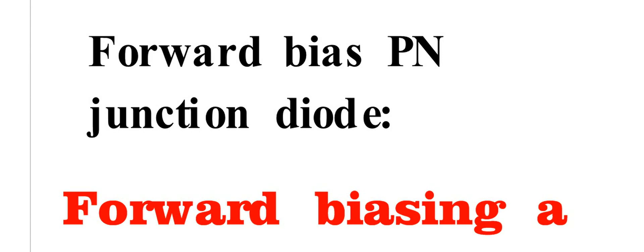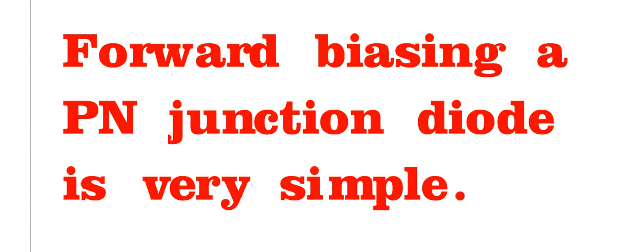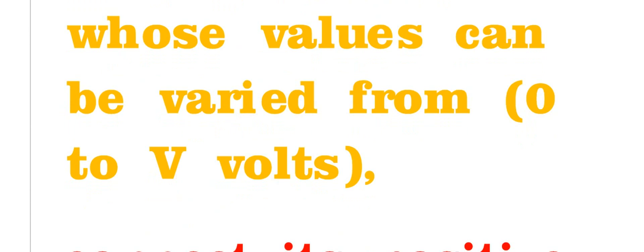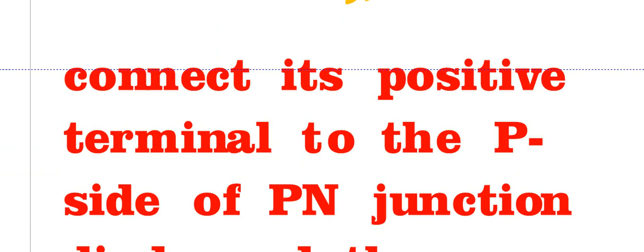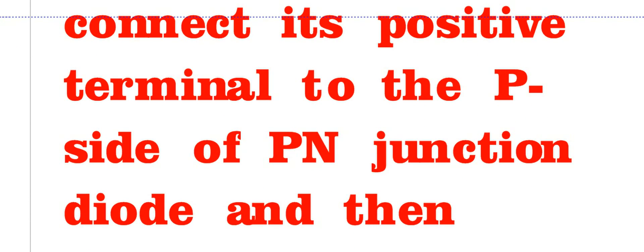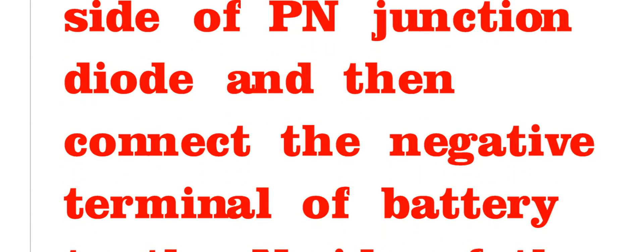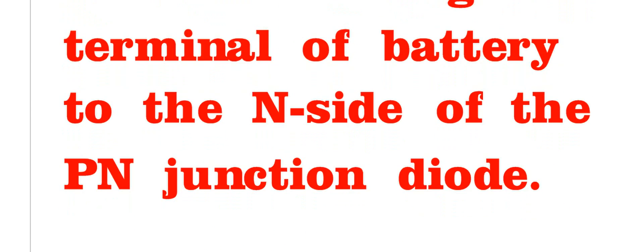Today I am going to discuss the forward biasing of the P-N junction diode, and how the diode behaves by giving forward biasing. Forward biasing a P-N junction diode is very simple. We just need to take a battery whose value can be varied from 0 to V volts. Connect the positive terminal to the P side and the negative terminal to the N side of the P-N junction diode.